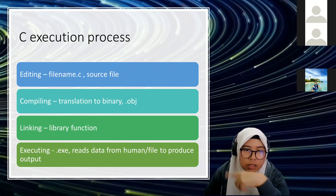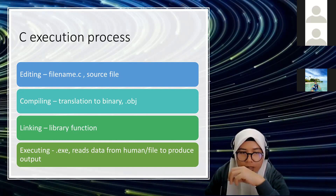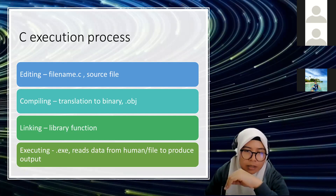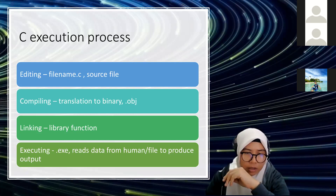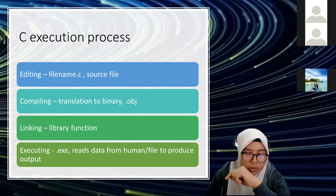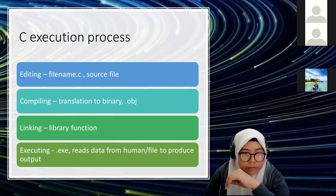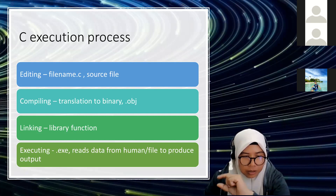When we run the source file, we compile it first. It will translate our sentences or syntax into binary. Binary files have the extension .obj — object files. We don't need to worry about creating this file; it is created automatically. After compilation, the translation to binary is done — binary being the numbers we learned in mathematics.